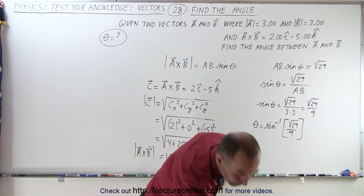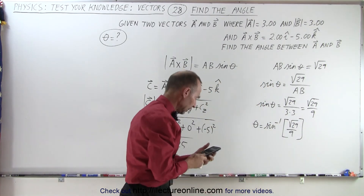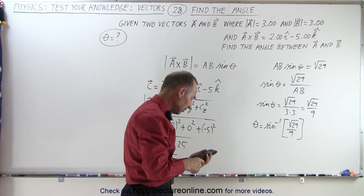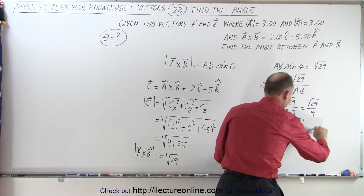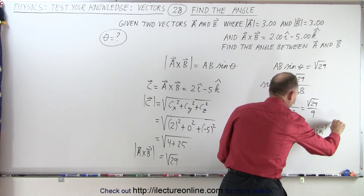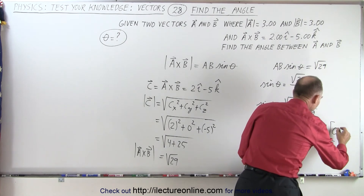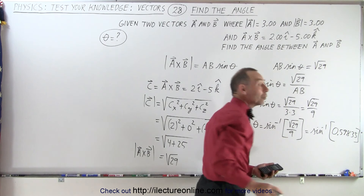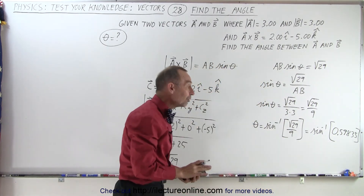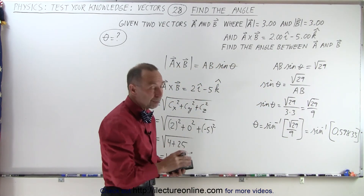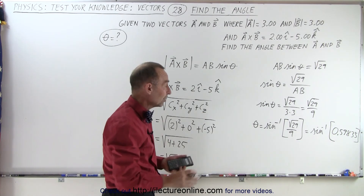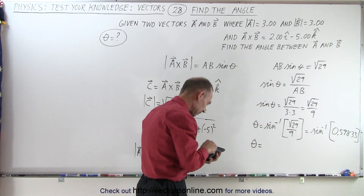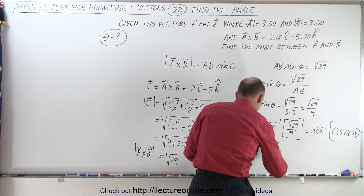Let's go ahead and calculate that. Take 29, take the square root, divide by 9 — that equals the inverse sine of 0.59835. Notice, that's a good check: if that number is not somewhere between negative 1 and 1, we probably did something wrong. It has to have a magnitude less than 1. Taking the inverse sine of that gives us 36.8 degrees.